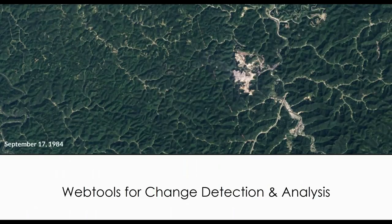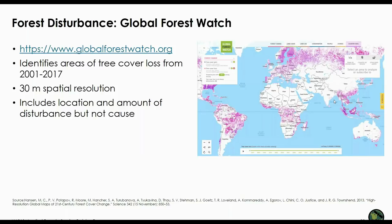Next I'm going to show you some web tools you can use for change detection and analysis. We've talked about Global Forest Watch in previous webinars — it's a great web tool for looking at forest cover change. It's an interactive online forest monitoring and alert system designed to empower people with the information they need to better manage and conserve forest landscapes. It provides information about the status of forest landscapes including tree cover gain and loss, land cover, land use, conservation, population density, and country-specific data.